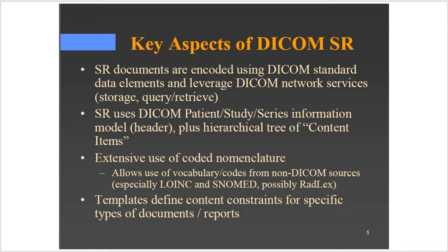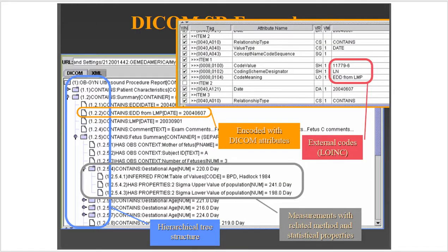DICOM SR follows the patient/study/series information model. Here's a picture of a DICOM structured document — you should see some familiar things: DICOM tags or group numbers and their attribute values. Don't worry about the link or the structure tree; just understand that this is a textual DICOM document.